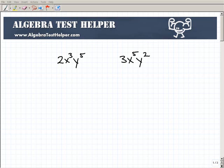Alright, so here I have two terms: I have 2x cubed y to the fifth, and 3x to the fifth y squared. Let's go and do some things with them.